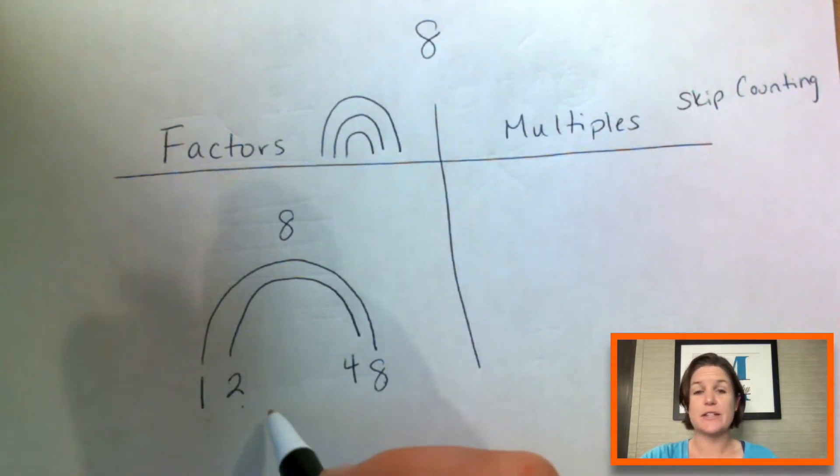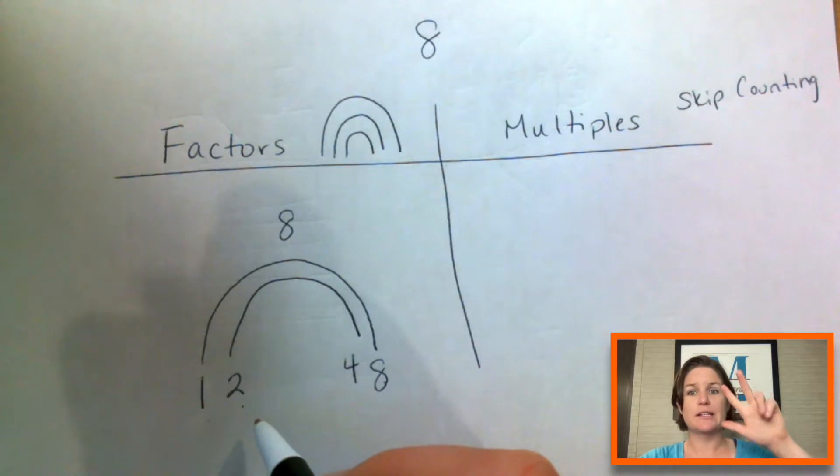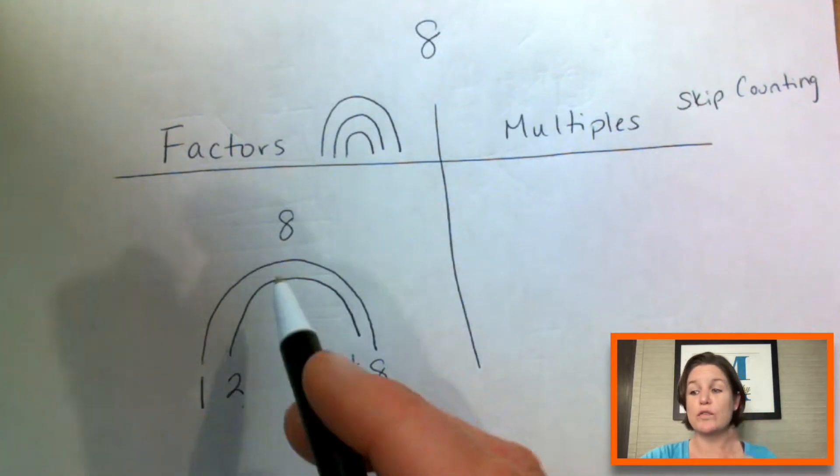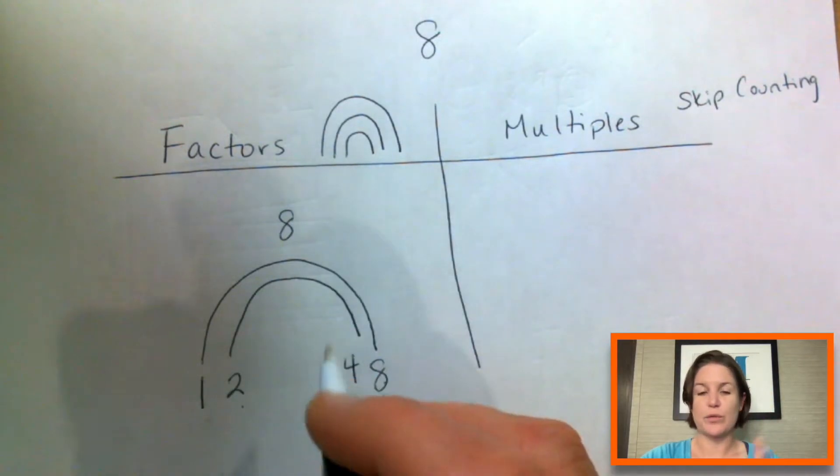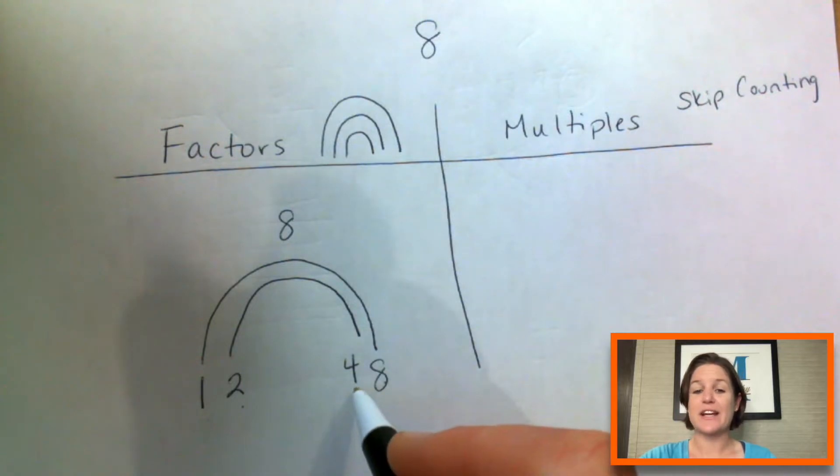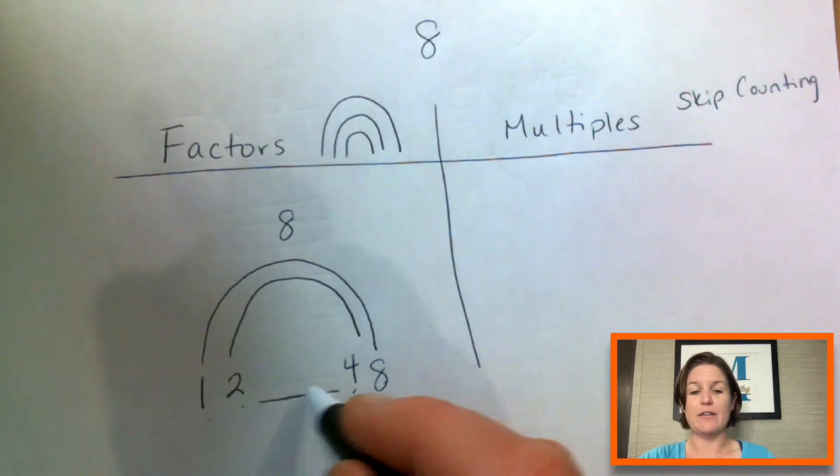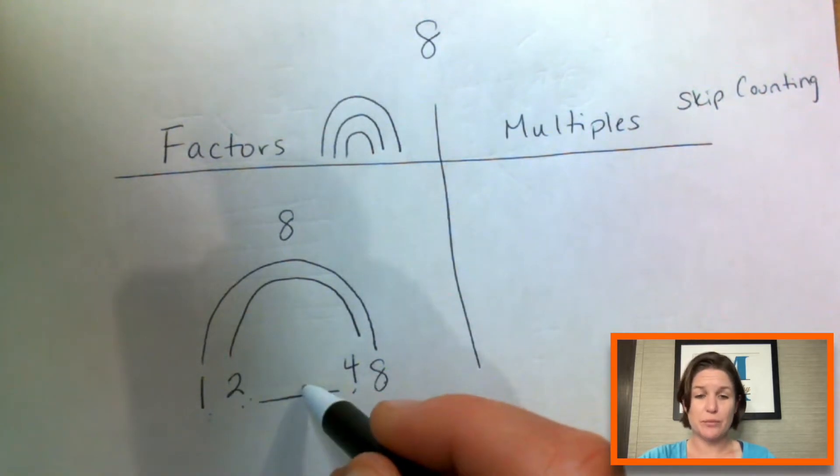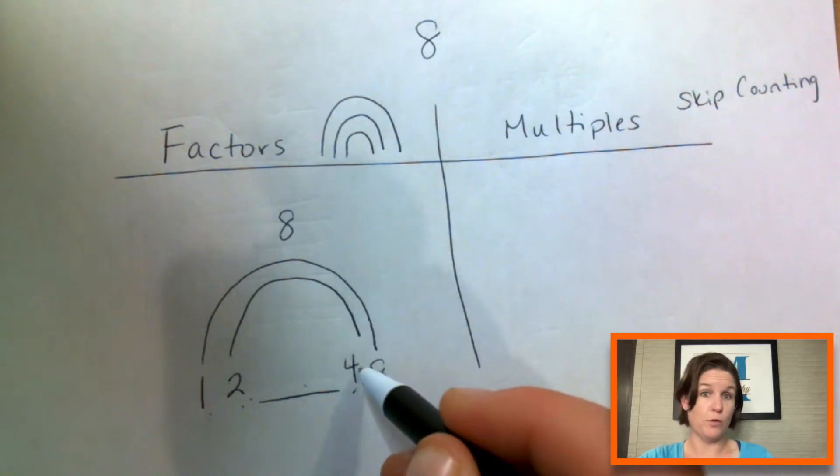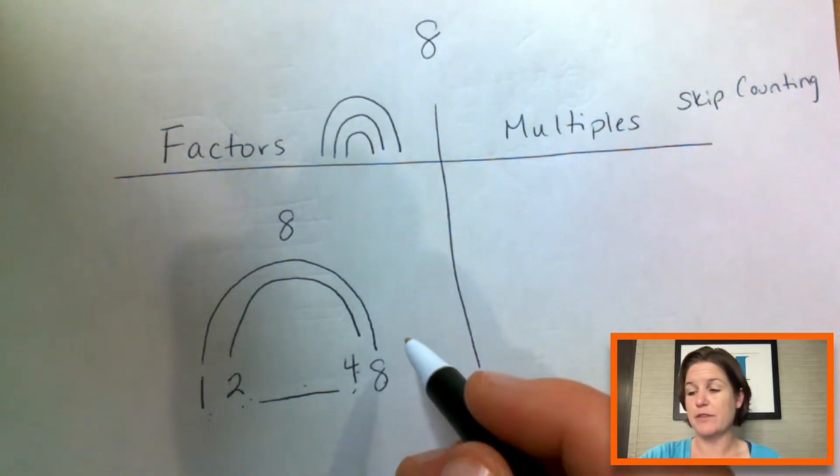Let's try threes. Three, six, nine. It goes over the eight. So three does not work. And then our next number, our next factor would be four. So there's nothing else that we could have. One, two, we tried three, and then we get to four on that side. So we've closed up our factor rainbow,